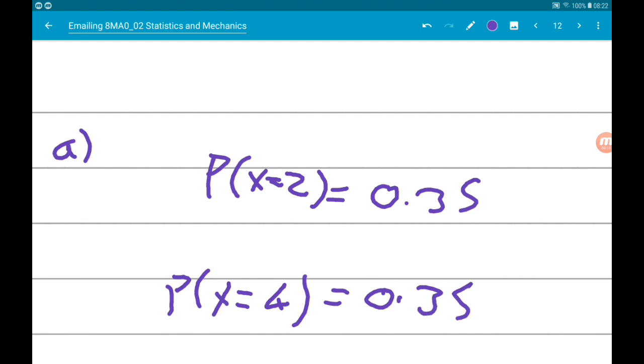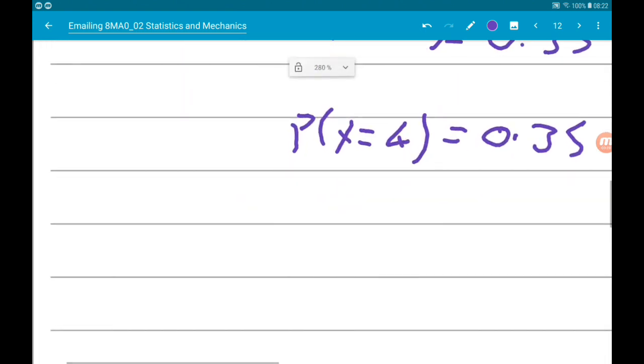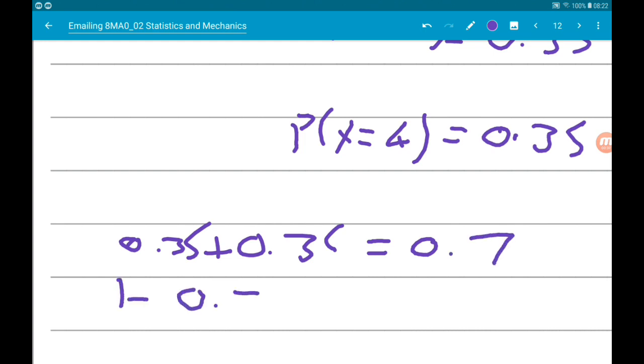Remember, the probability of X equals 2 is 0.35, and the probability of X equals 4 is 0.35, so together that's 0.7. One minus 0.7 is 0.3.